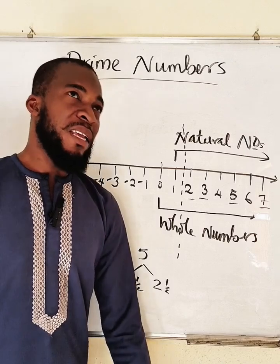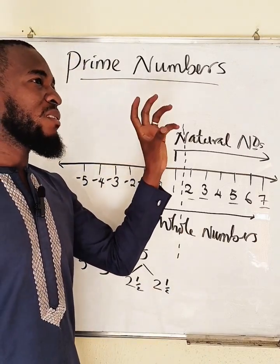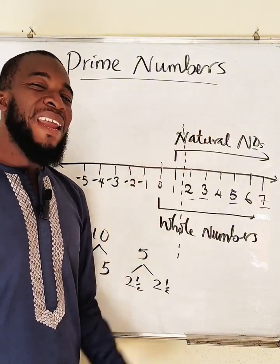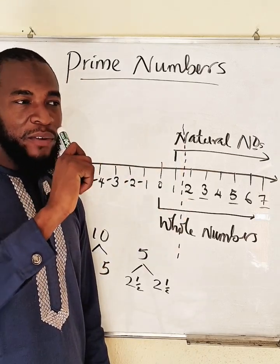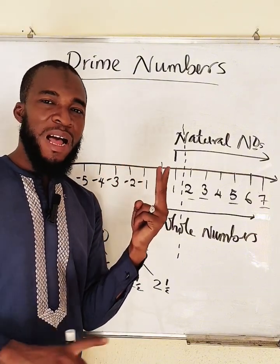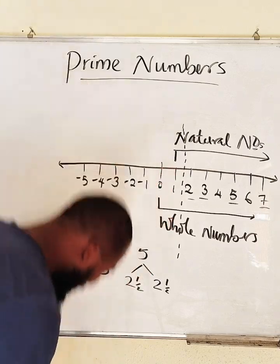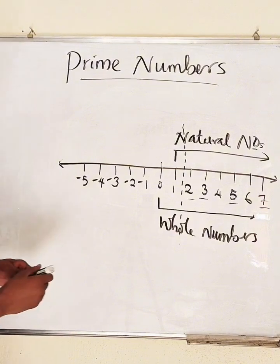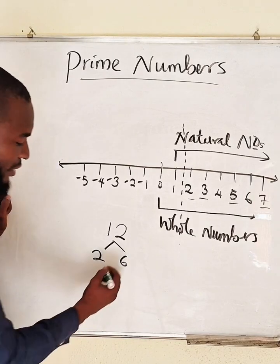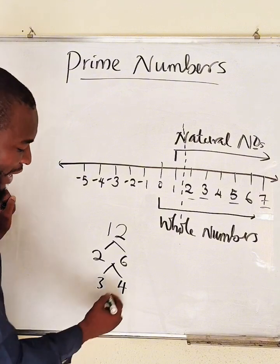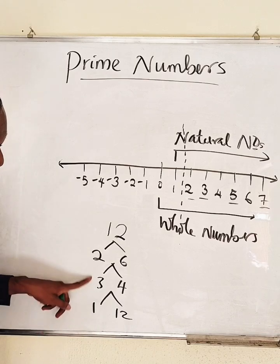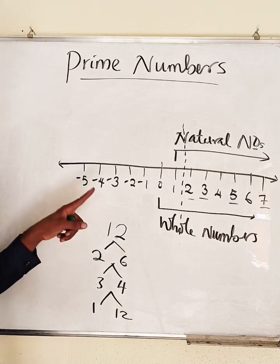This is the first definition. Secondly, a prime number is any natural number greater than one that has only two factors. What do we mean by factors? Any two numbers you can multiply to get another number — those two numbers are factors of that number. For instance, I can multiply two by six to get 12, or three by four to get 12, or one by twelve. So one, two, three, four, six, and twelve are all factors of 12.